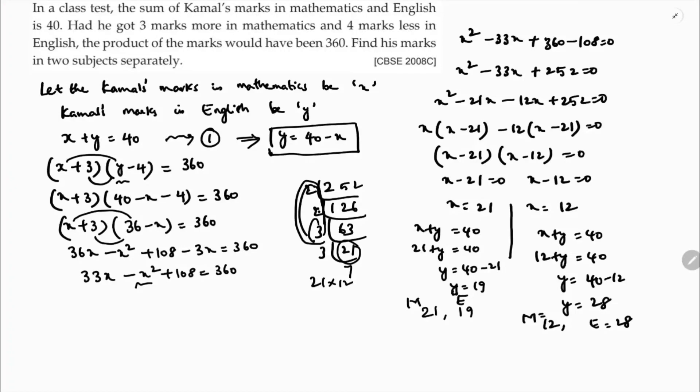If you want, you can check. If it's 21, then 21 plus 3 is 24 and 19 minus 4 is 15. So 24 times 15 equals 360. Or check the other way: 12 plus 3 is 15, and 28 minus 4 is 24. So 15 into 24 is again 360. In this way, we can check.